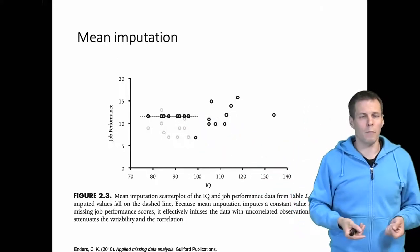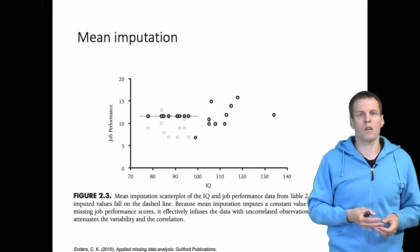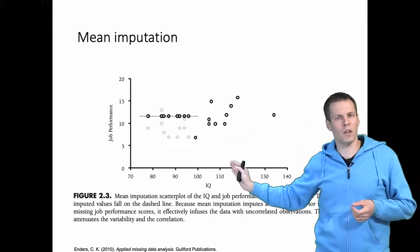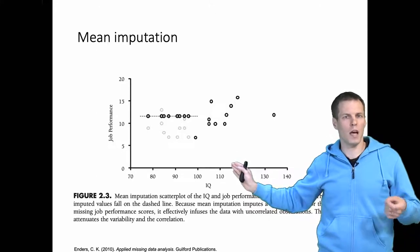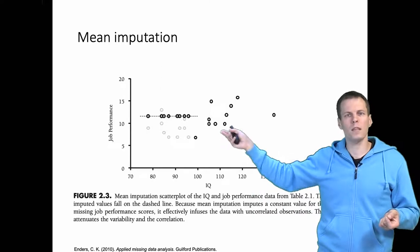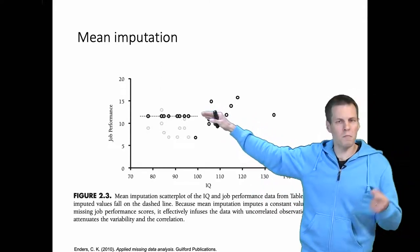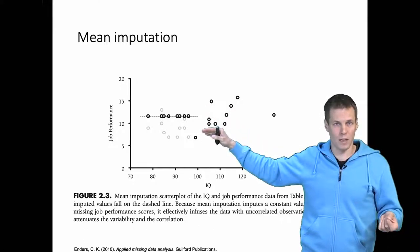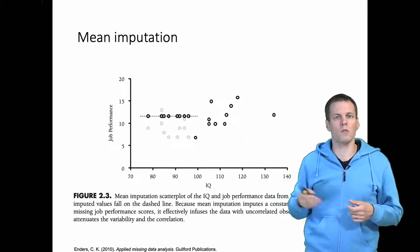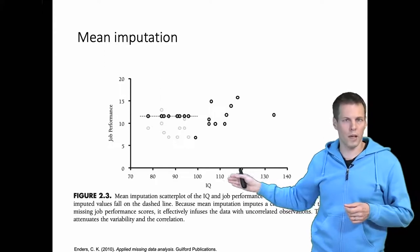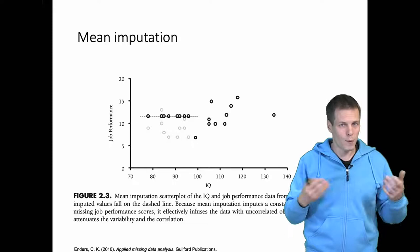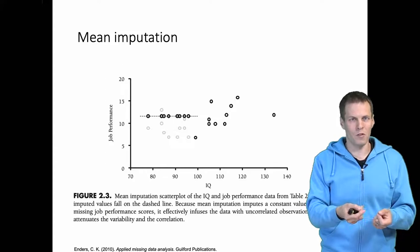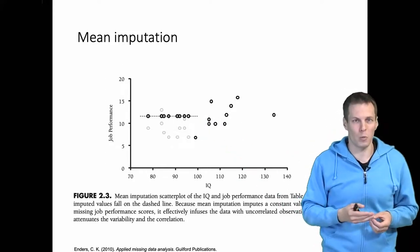What happens if we run a regression analysis after mean imputation? The original regression of job performance on IQ would have no problems, since missingness depends on the x variable (IQ). But if we do mean substitution, the imputed observations are systematically higher than the original observations, so our regression analysis will be biased and inconsistent. We have caused that bias ourselves through the imputation procedure, even though list-wise deletion in this case would have given us consistent and unbiased estimation.